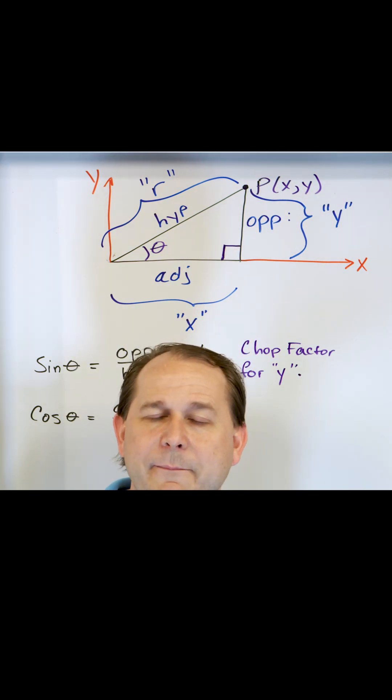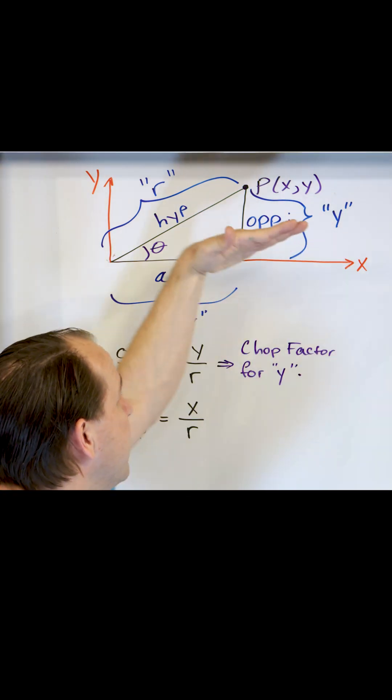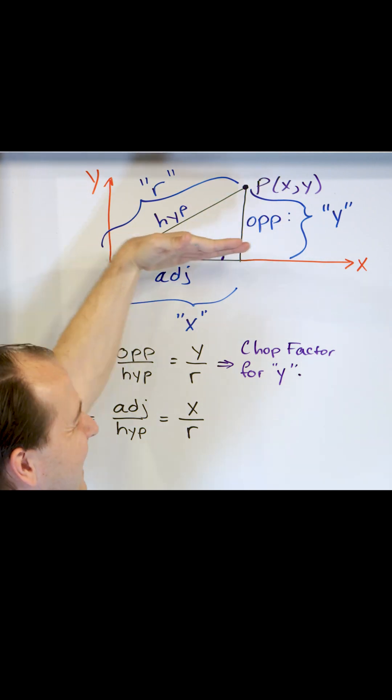If you have a large chop factor in the x direction, it means that most of the triangle is actually going along the x direction.